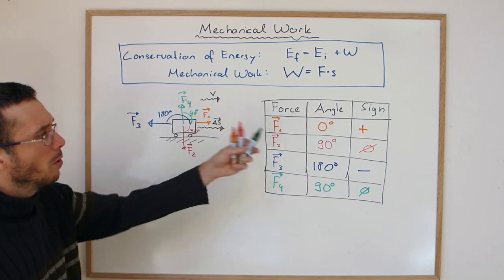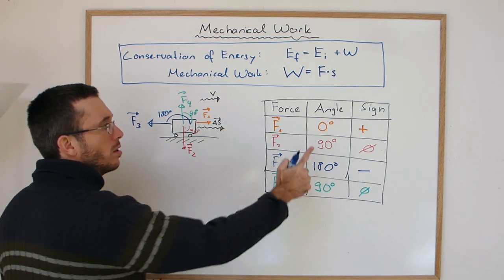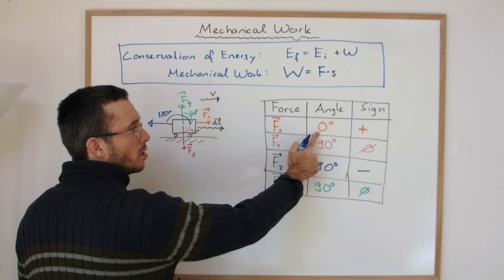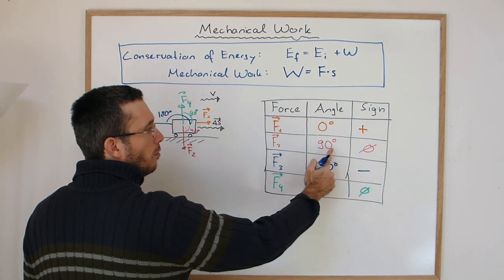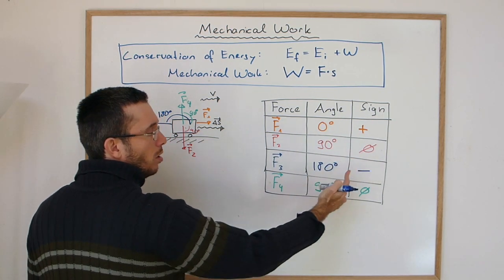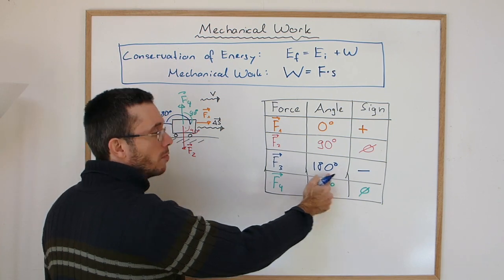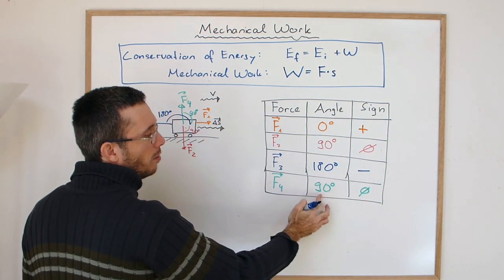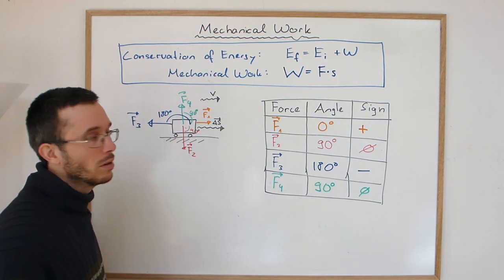So now the main question is what function will for zero degrees produce us a positive sign, for 90 degrees give us zero, for 180 degrees give us a negative sign, and for 90 degrees again give us zero.